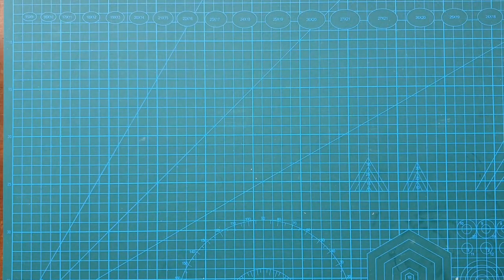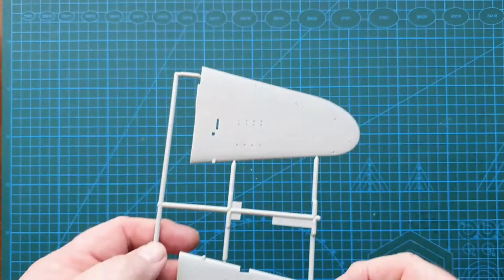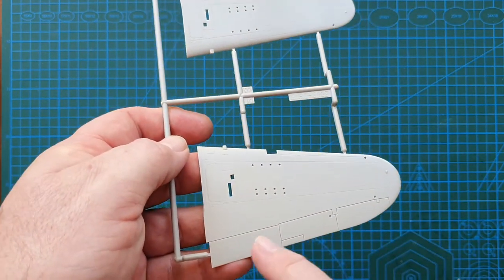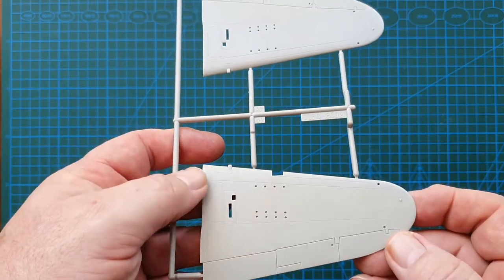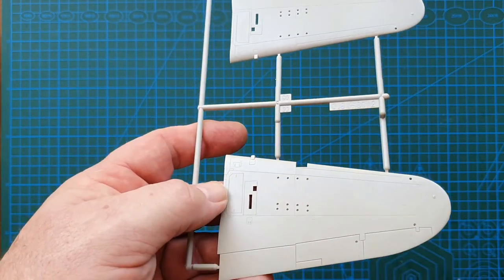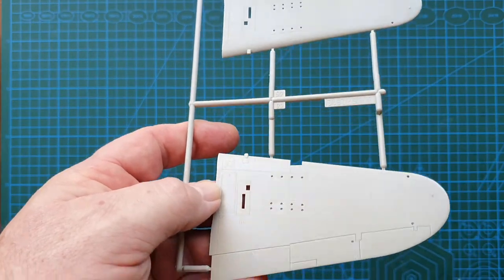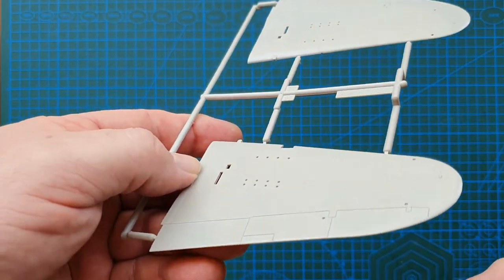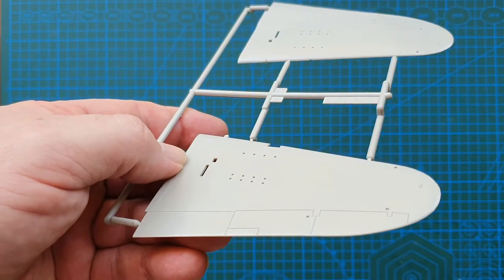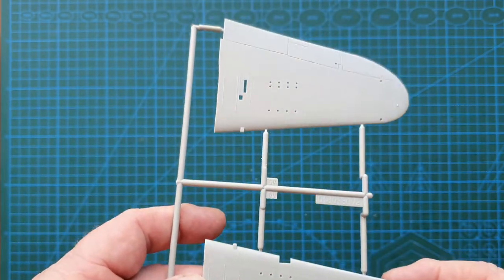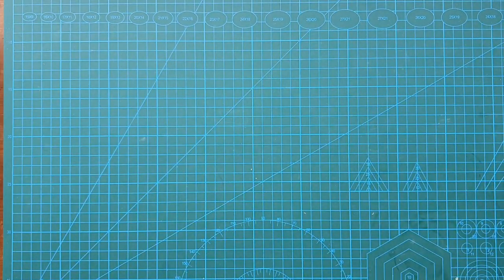Now we'll have a look at the bottom. Same again—really crisp detail, fixed ailerons, flaps, but really sharp where the little access hatches are. That's really nice detail, really nice. I like that.